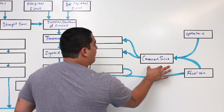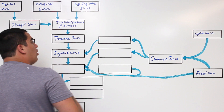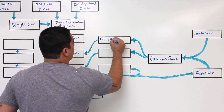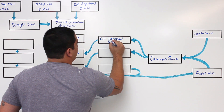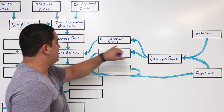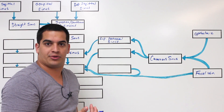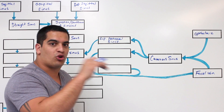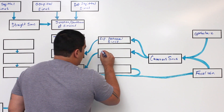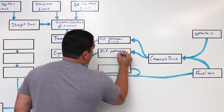The cavernous sinus can give off two branches. One is called the superior petrosal sinus, which empties directly into the sigmoid sinus. The other is called the inferior petrosal sinus, which runs within Dorello's canal along with the abducens nerve — the sixth cranial nerve.